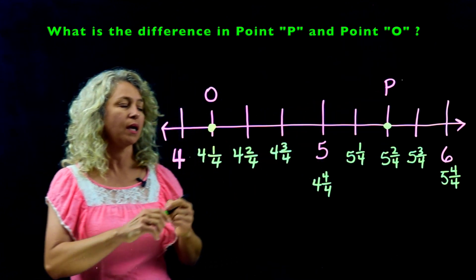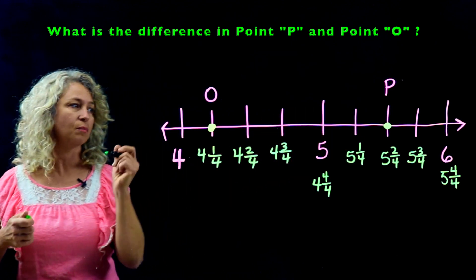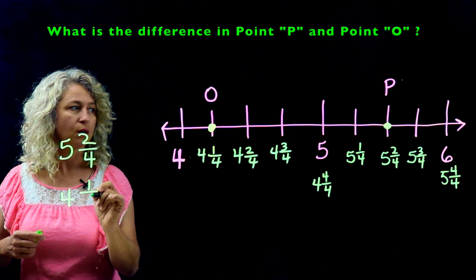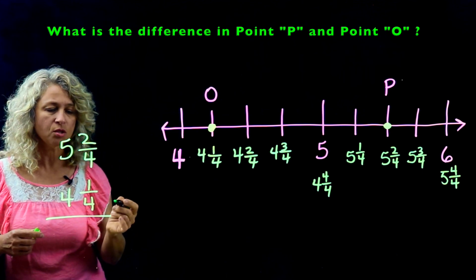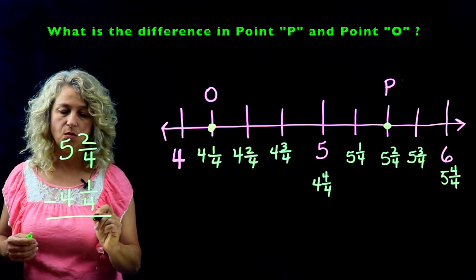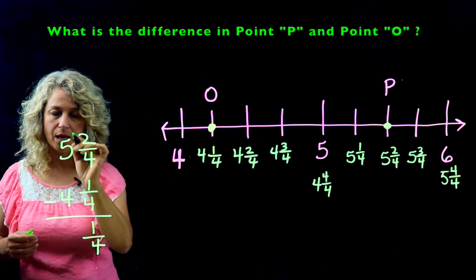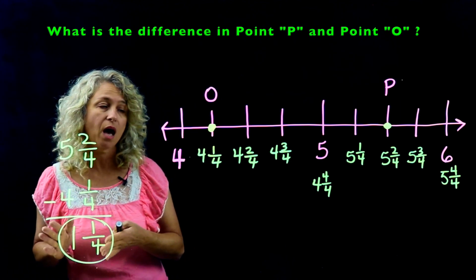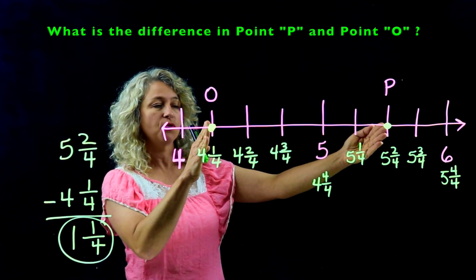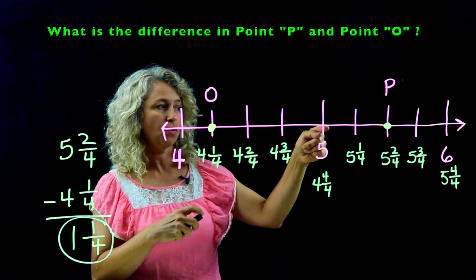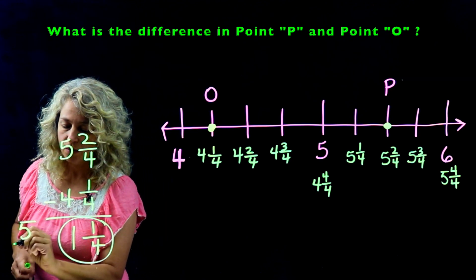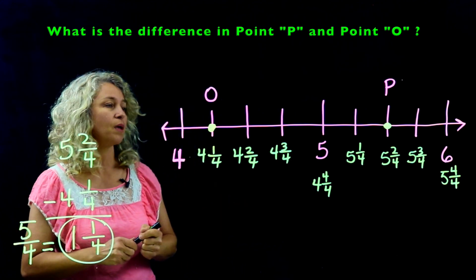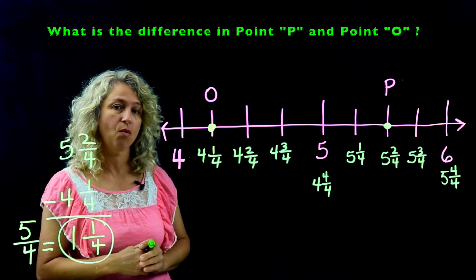Now answer the question: the difference between point P, which is five and two fourths, minus point O, which is four and one fourth. Same denominators — just subtract: two minus one is one, denominator stays the same, five minus four is one. Answer is one and one fourth. An easier way is to count the tick marks between: one fourth, two fourths, three fourths, four fourths, five fourths — which equals one and one fourth.